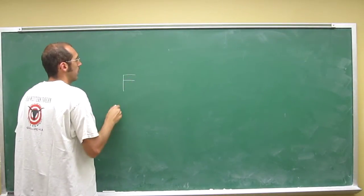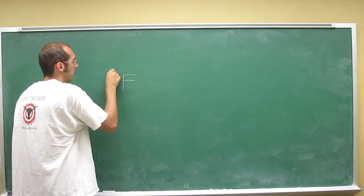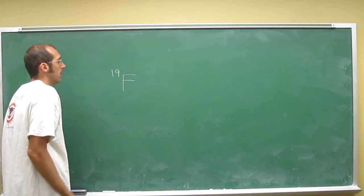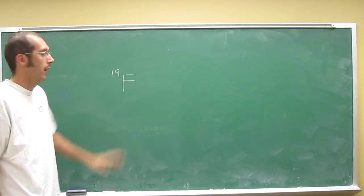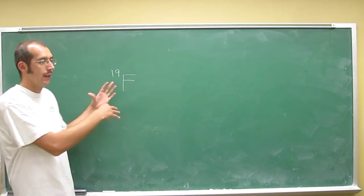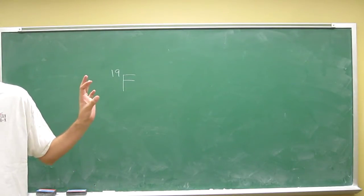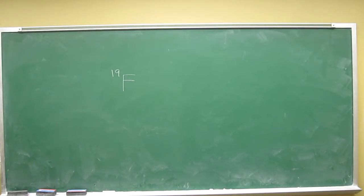So fluorine 19 is just the elemental symbol. And remember, we put the mass number in the top left. And remember, this is one particular atom that we're talking about, so it's not like that weighted average that was the 18.994 or whatever.